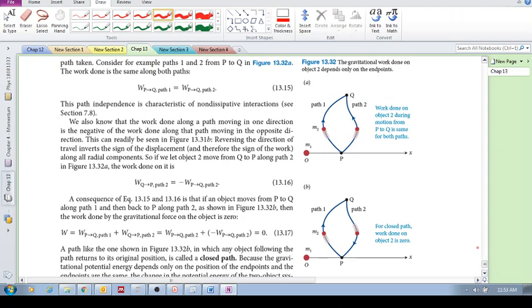Okay, then finally, so this is also what I'm trying to say is that the gravitational work done on object 2 depends only on the end points. So make sure that you get this idea. It only depends on the end points. So the work from P to Q is independent of the path taken. Right? So if you travel, if particle M2 or object M2 travels along path 1 or along path 2, the work done is the same.